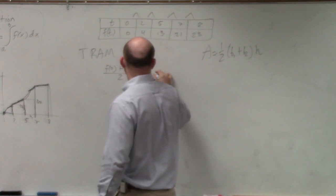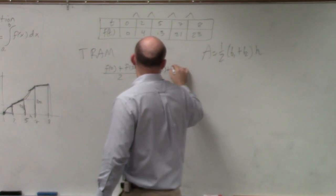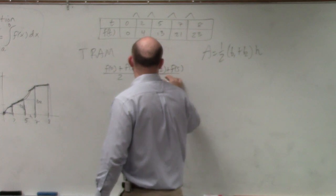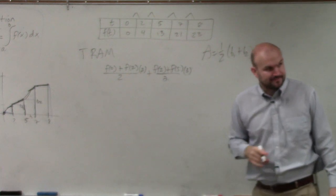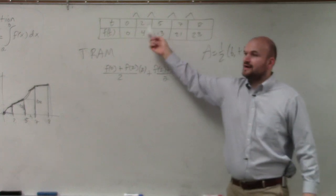Then we're going to say f of 2 plus f of 5 divided by 2 times your distance here, which is 3. From 2 to 5, you have 3.